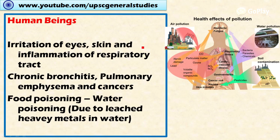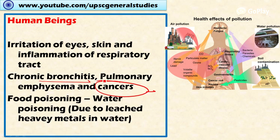The effects of acid rain on human beings include direct irritation of the eyes, skin, and inflammation of the respiratory tract. It can also lead to skin cancer, chronic bronchitis, pulmonary emphysema, and food poisoning. Water poisoning is also likely to occur due to the leaching of heavy metals into water sources.